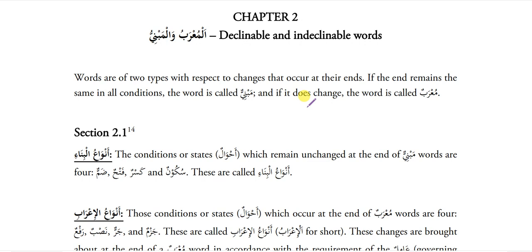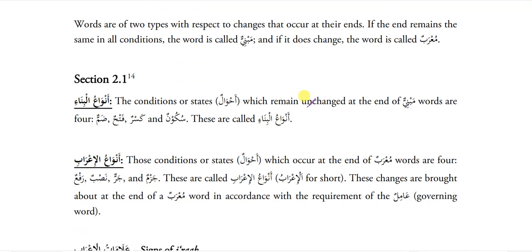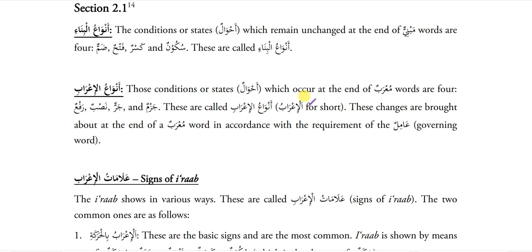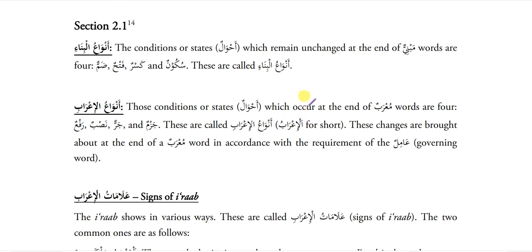Now Chapter 2: Al-Moharabu — the Declinable and Indeclinable, the Mabniy words. Words are of two types with respect to the change that occurs at their end. If the end remains the same in all conditions, the word is called Mabniy, and if it does change, it is called Morav.